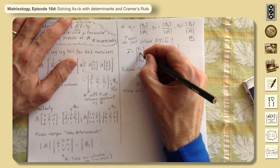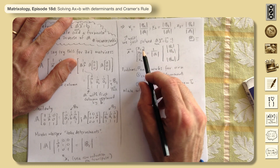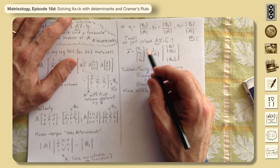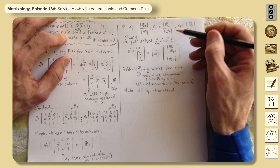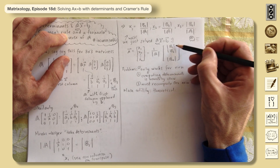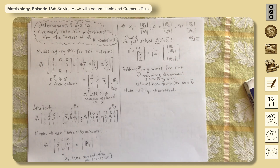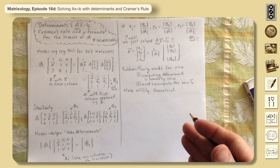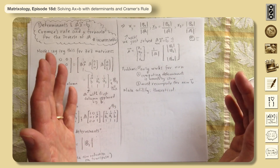For an n×n system, the solution to Ax = b is x = (1/det(A)) times the vector of determinants [det(B1), det(B2), ..., det(Bn)], where each Bj is the matrix A with column j replaced by the vector b. That's actually a formula — it solves our problem.